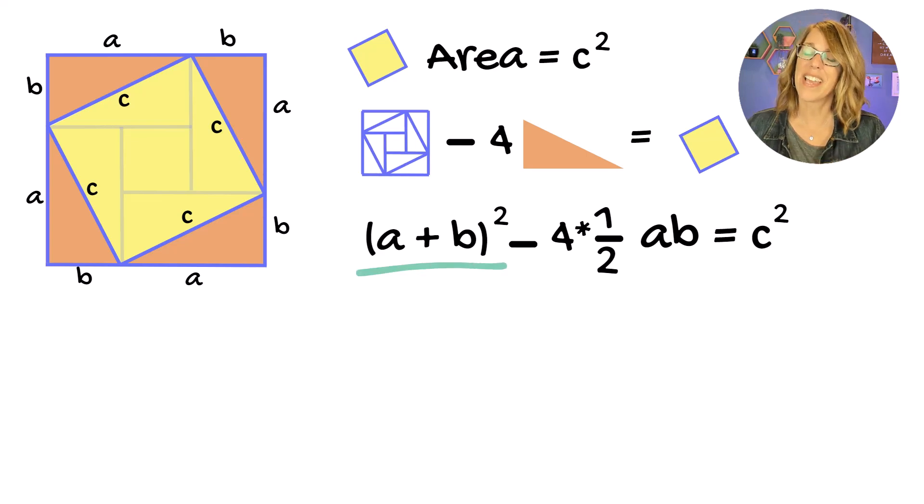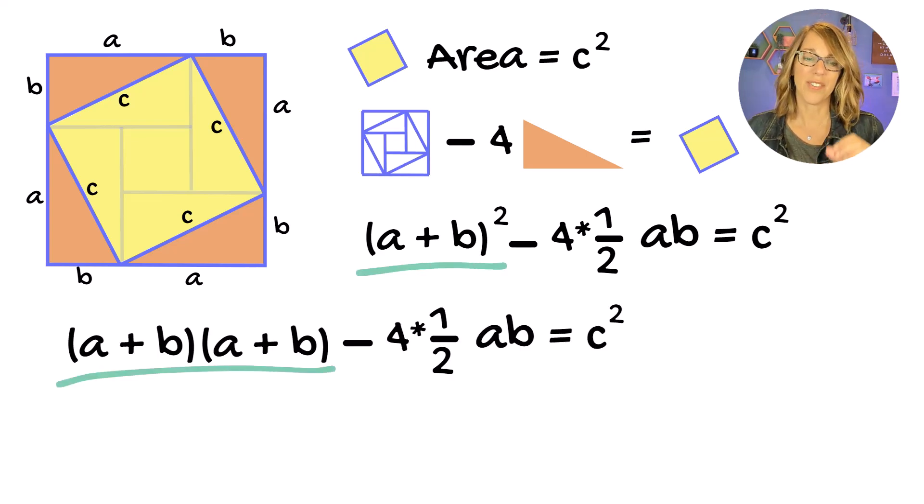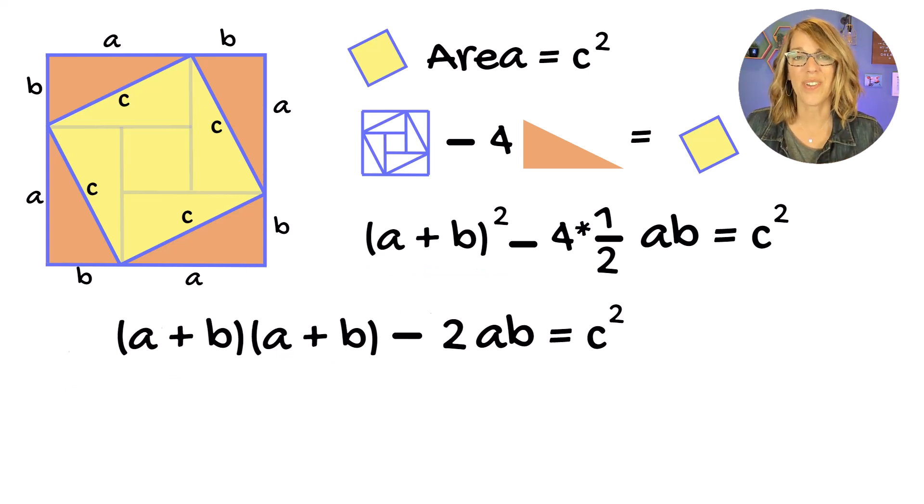I need to expand my A plus B squared, and I'm going to do that, but also let's cancel the 4 and the 2, leaving me with a coefficient of 2 on the AB.